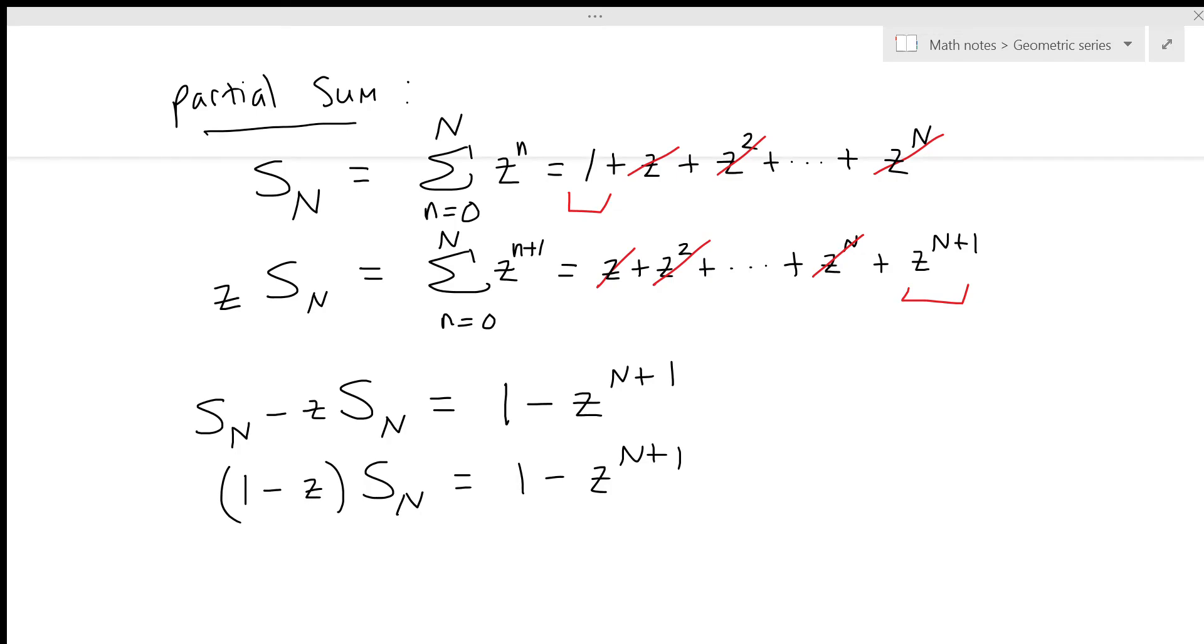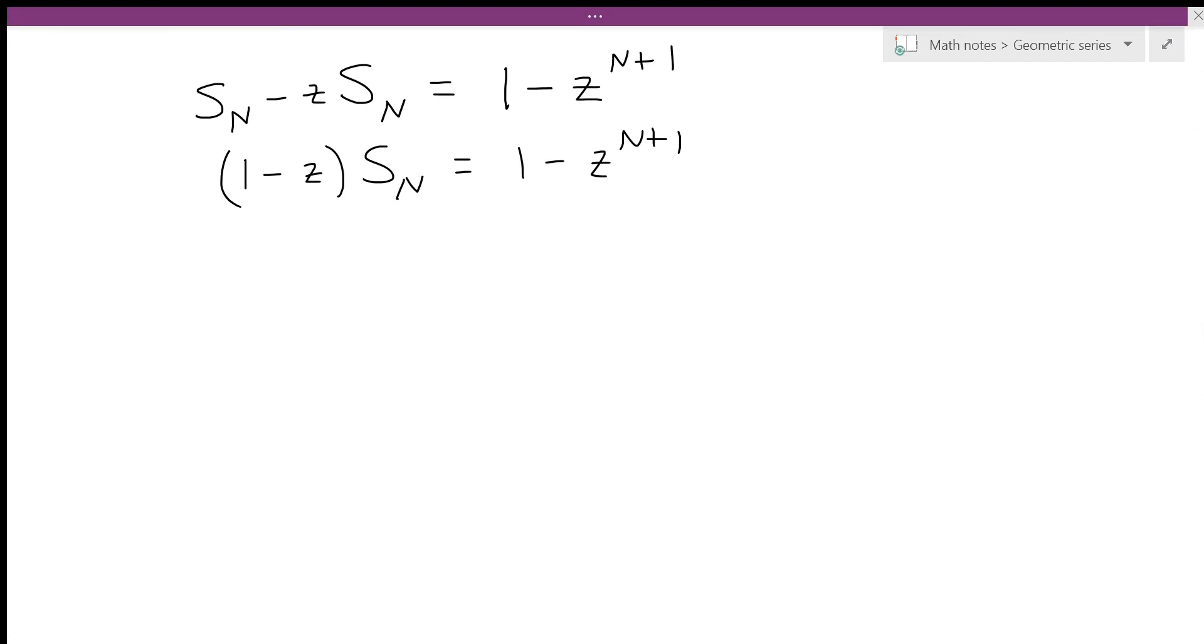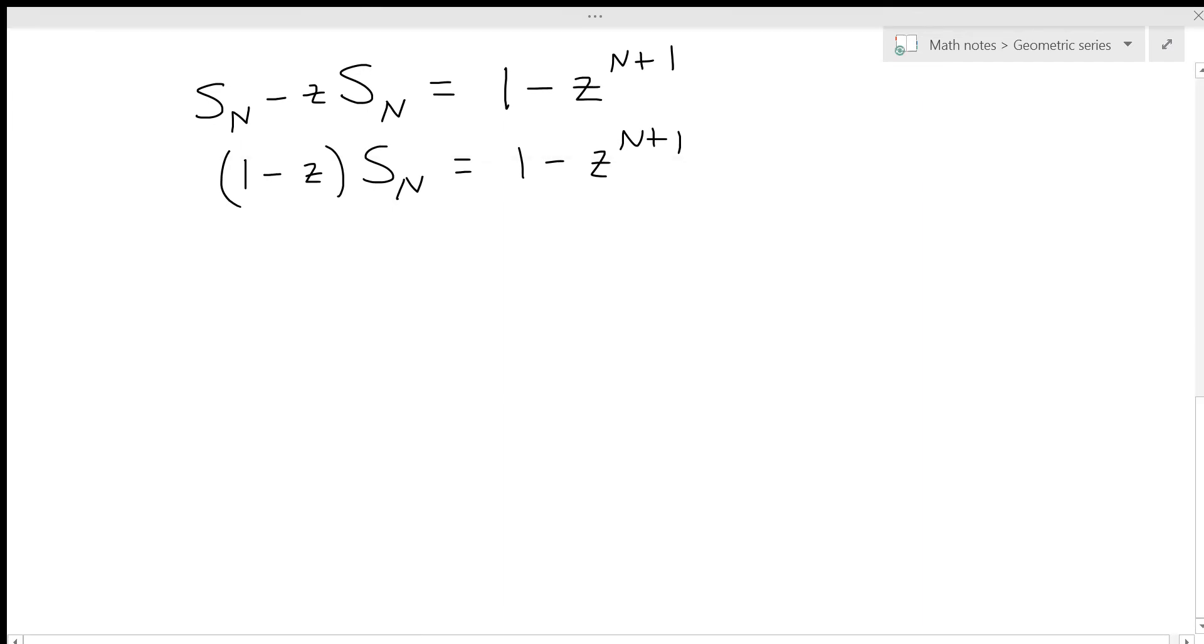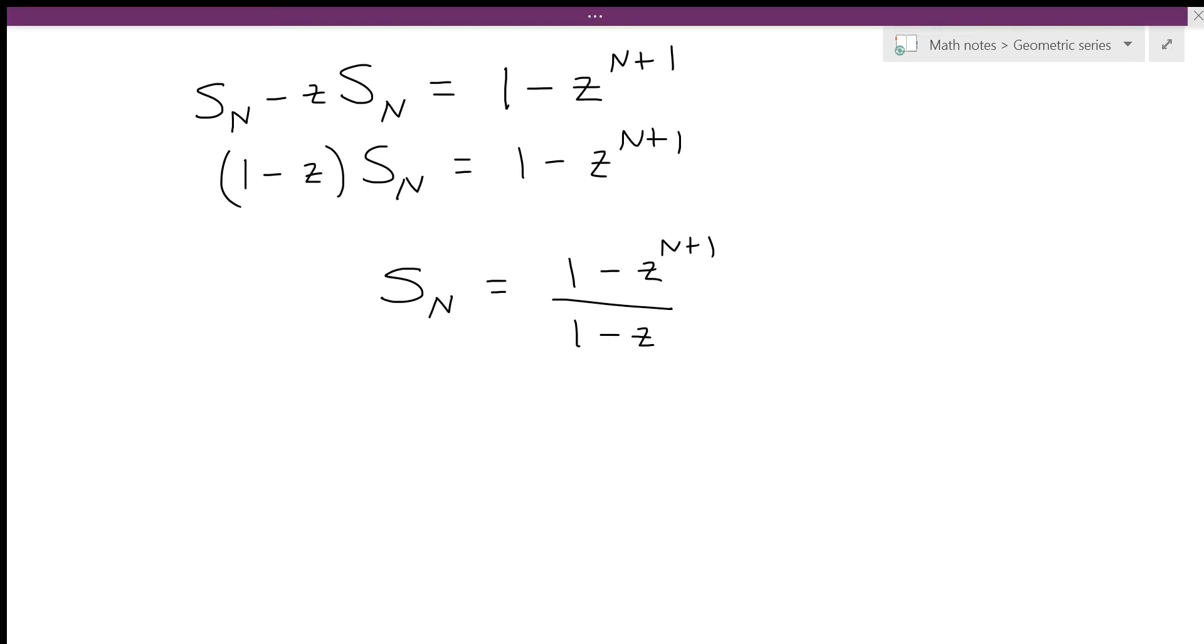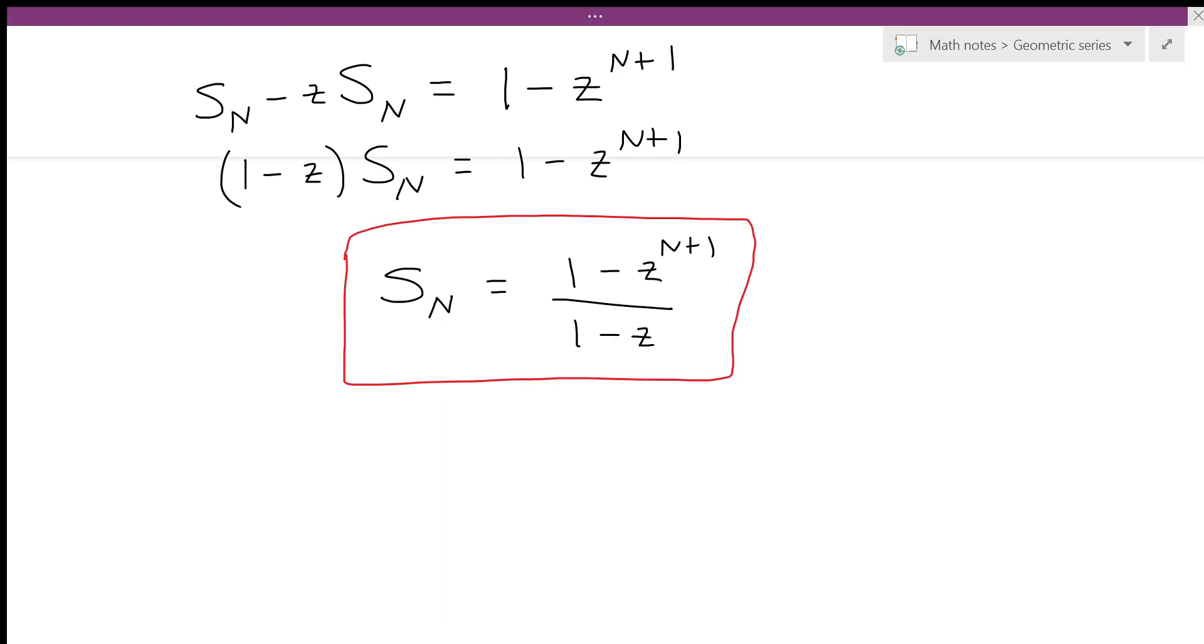And then by rearranging, we can divide by 1 minus z. And so we get a closed form expression for S_N: 1 minus z to the n plus 1 divided by 1 minus z. So this is a very important formula. And it's the formula that's going to allow us to prove our main formula for this geometric series.